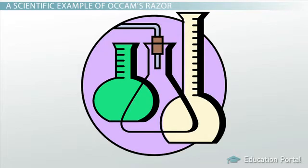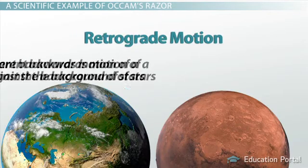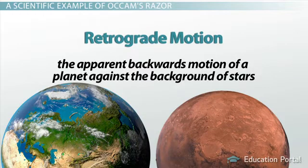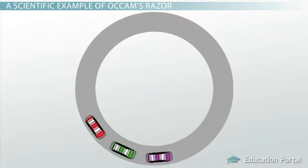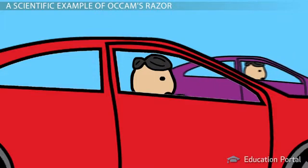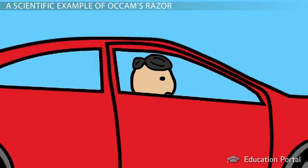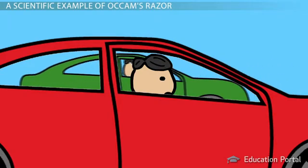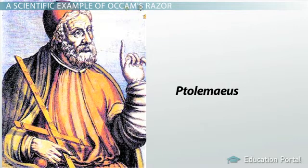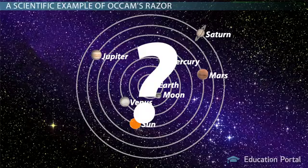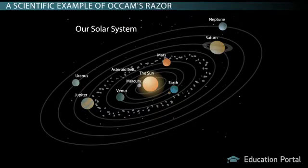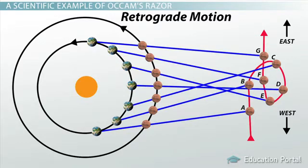From a scientific standpoint, we can apply the same principle to retrograde motion of the planets — the apparent backwards motion of a planet against the background of stars. Imagine you're on a circular race track in a really fast car. Everyone is moving forwards, but as you overtake slower cars, they appear to move backwards. We now know each planet takes a different time to complete its orbit around the Sun. Faster moving planets like Earth will overtake Mars every now and then, making it seem that Mars is moving backwards.